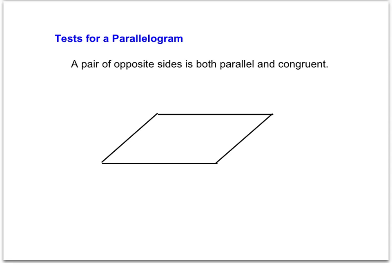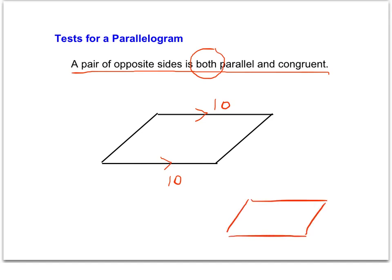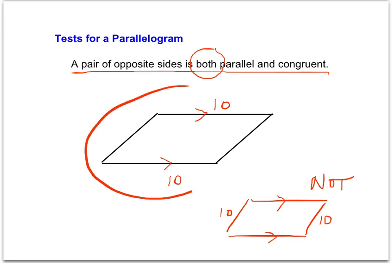This next test is less common: a pair of opposite sides is both parallel and congruent. The key here is that we're talking about just one set of opposite sides — if those two sides are parallel and at the same time congruent, then it is a parallelogram. Keep in mind it has to be the same pair. If one set of sides is parallel and a different set is congruent, that is not enough information — that would not confirm a parallelogram.